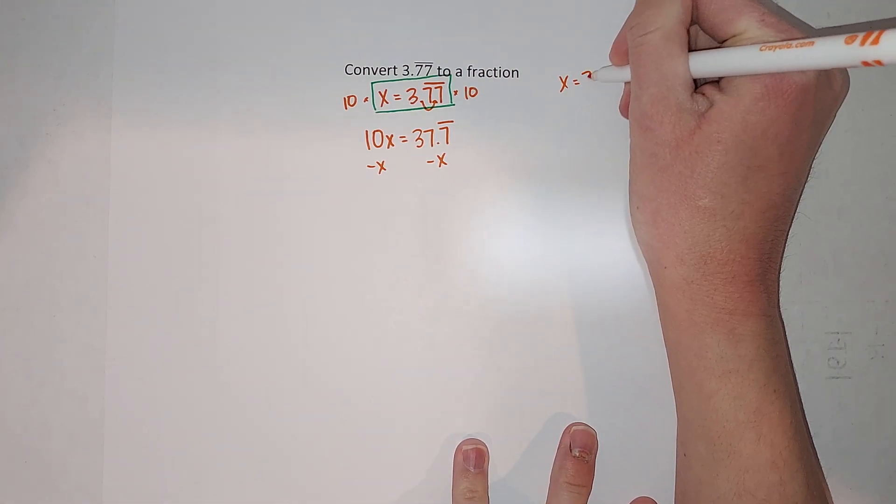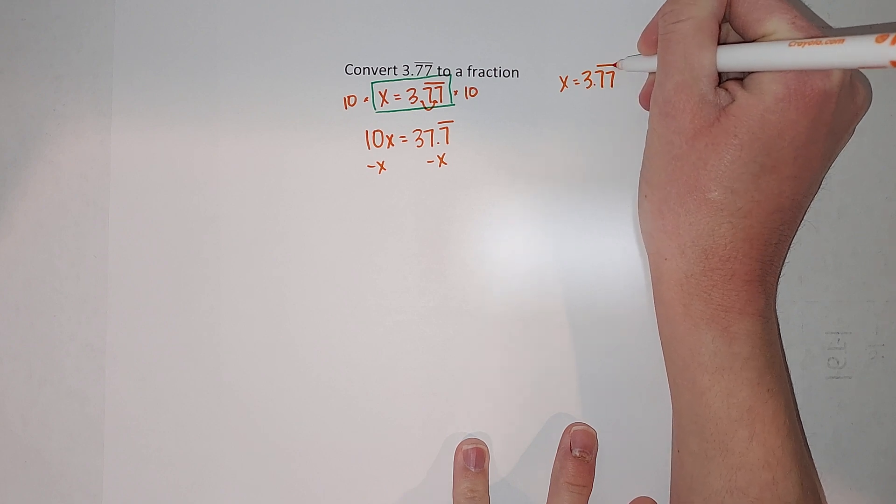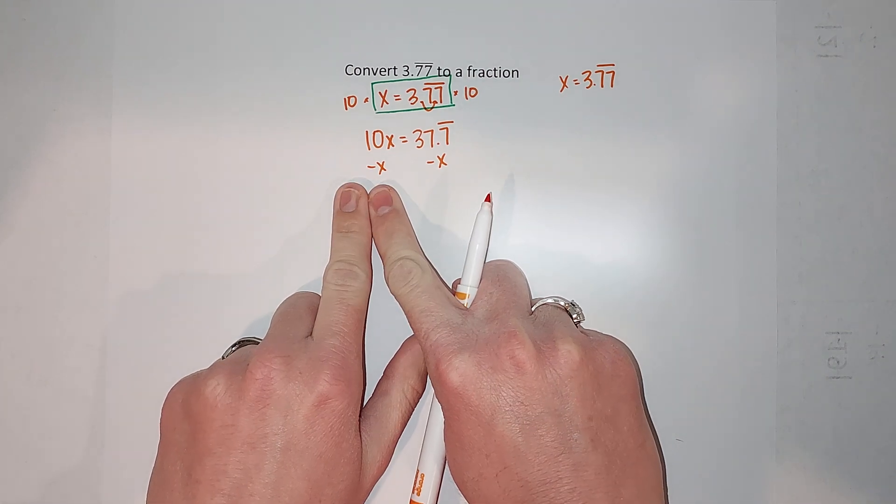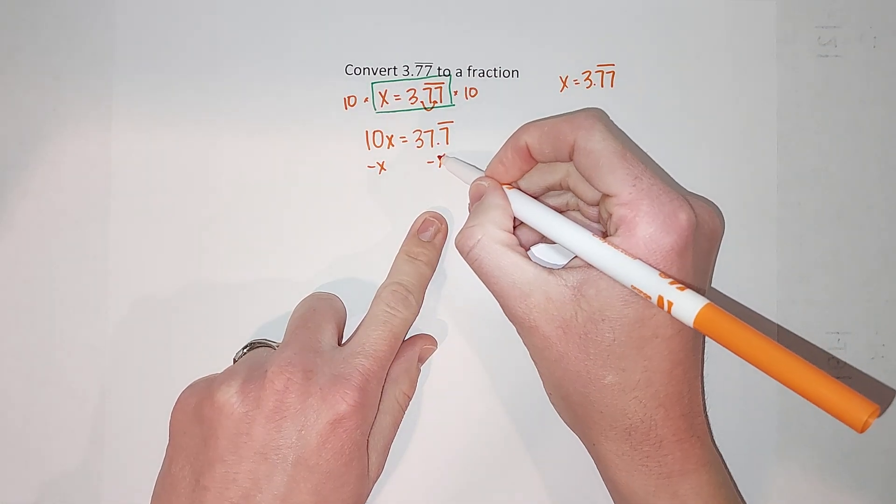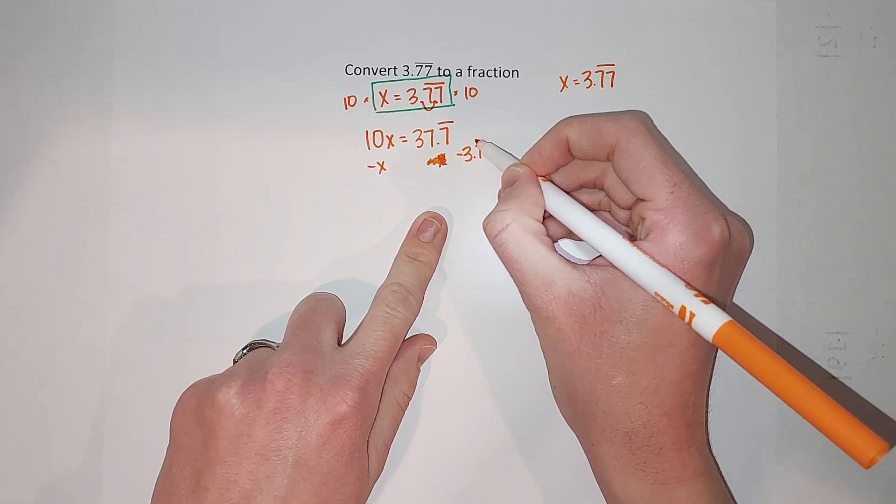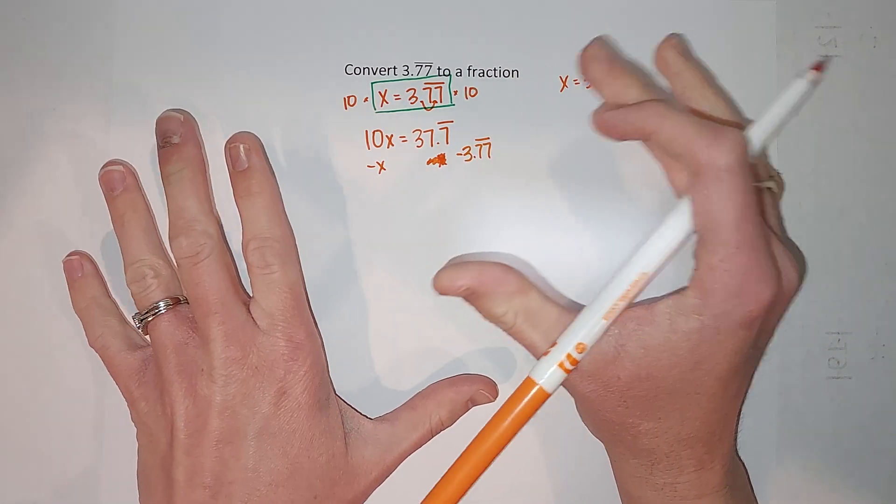So we can write it either way and it's still x. I'm going to write minus x here on this side, I'm going to write minus 3.77 repeating. But in this equation they're the same thing.